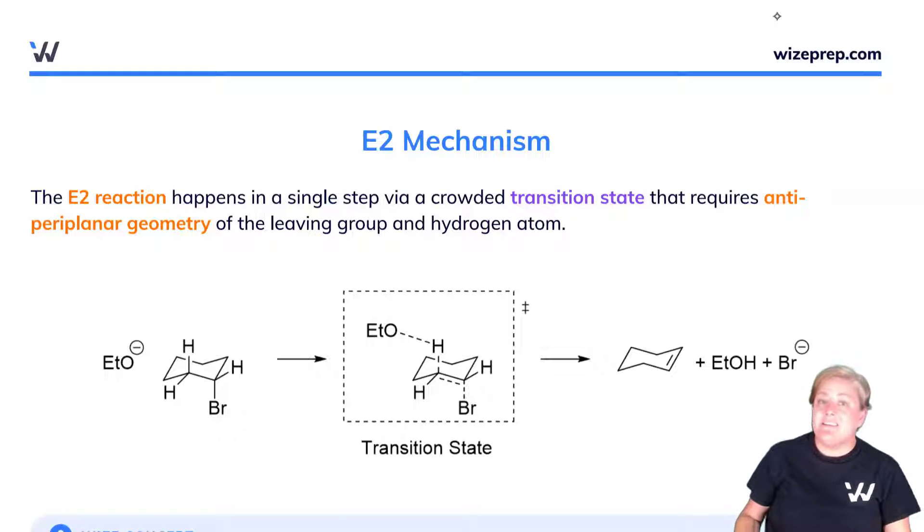The E2 reaction happens in a single step via a crowded transition state that requires anti-periplanar geometry between the leaving group and the hydrogen atom. Remembering that anti-periplanar means 180 degrees apart from each other. Let's see what this would look like in practice.